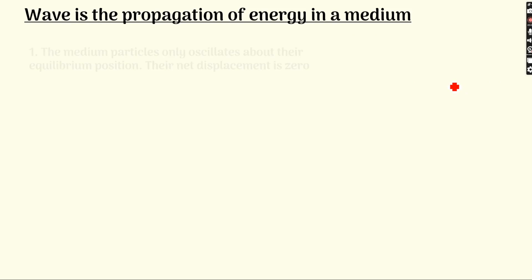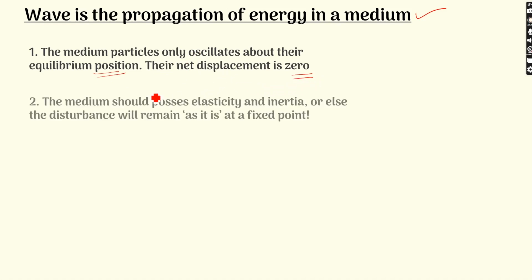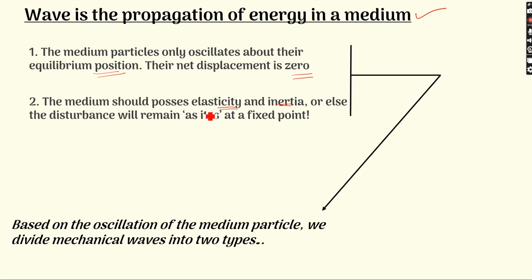When waves are traveling forward, mechanical waves require a medium, and there are certain characteristics of the medium to remember. The medium particles only oscillate about the equilibrium position and the net displacement is always zero. Another very important aspect: the medium must possess elasticity and inertia. If it is not elastic, the medium will use the energy for permanent shape change or deformation. We want it to take the energy and transfer it to the next particle without any loss. So the medium has to be elastic — these are two very important conditions for a medium propagating mechanical waves.